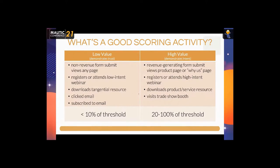Low value activities also include clicking on an email, visiting any random web page, or subscribing to your email newsletter — that doesn't mean somebody's ready to buy. For those, you want to add points at less than 10% of your threshold. On the other side, high value activities include submitting a revenue-generating form, visiting a very high-intent page, diving into specs or your value proposition, downloading a product or service brochure, or attending a webinar you'd only attend if you were near ready to buy.